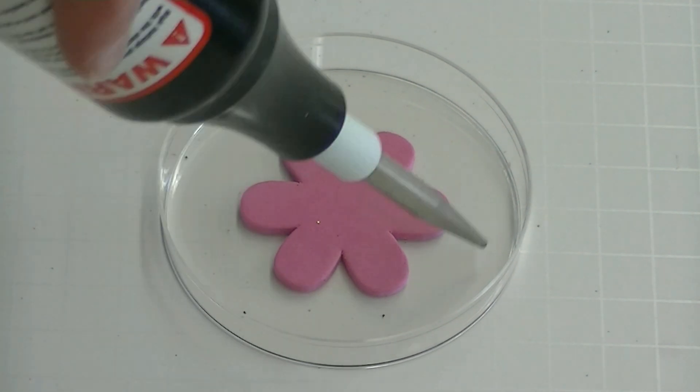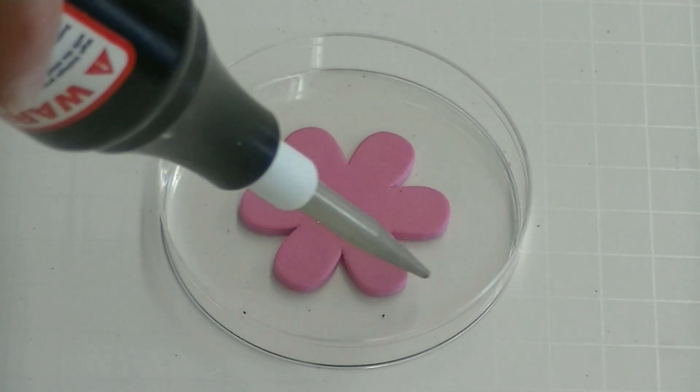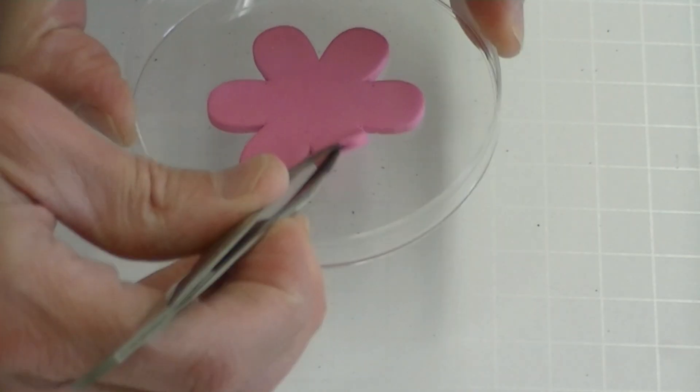The part of the dish exposed to the discharge is chemically modified. The portion of the dish covered by the sticker is not.